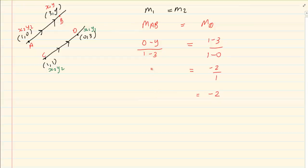Here we have minus y, 0 minus y is minus y over 1 minus 3 is minus 2. So, we got y over 2 is equal to minus 2. To get rid of the y, we are going to multiply by 2. So, I have y is equal to minus 4.